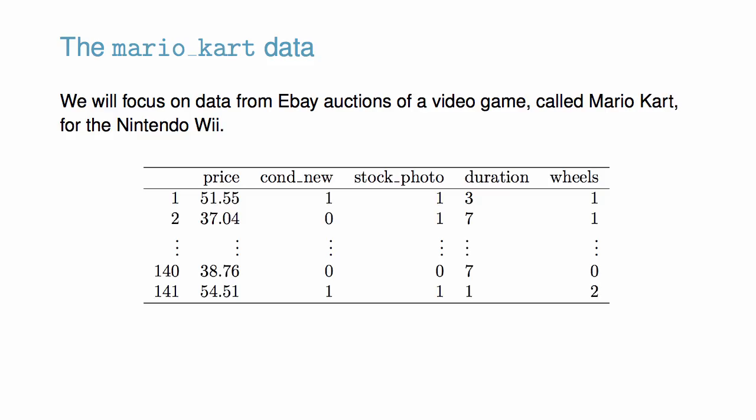Throughout, we will focus on data from eBay auctions of a video game called Mario Kart for the Nintendo Wii. The Mario Kart dataset includes results from 141 auctions. The outcome variable is the total price of an auction, which is the highest bid plus the shipping cost.